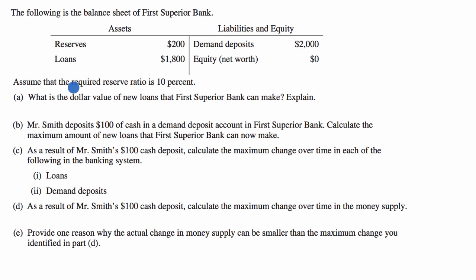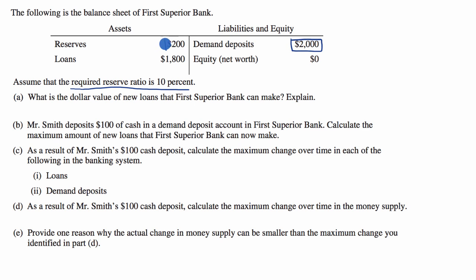Assume that the required reserve ratio is 10%. As a review, that's the percent of deposits that the bank needs to keep as reserves. We can see that it's at that reserve ratio right now — it has $2,000 in deposits, and so it needs to keep 10% as reserves. 10% of $2,000 is $200, so it's at its minimum reserves already.